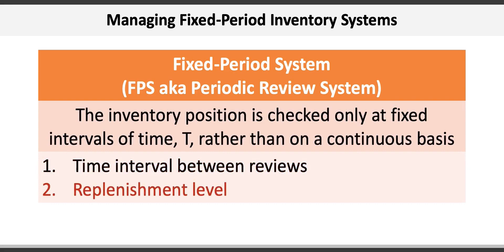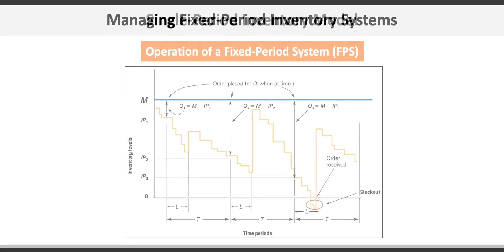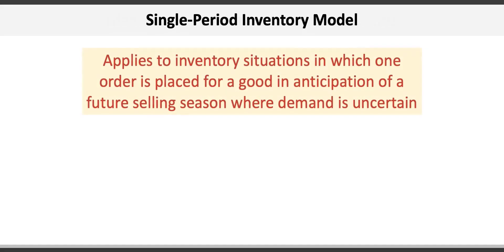In a fixed period system, the lead times and time intervals between reviews are the same, but the amount of inventory ordered may differ every time. For example, a vending machine restocked every week can hold 30 Mars bars but may have 10 left this week, requiring only 20 to be restocked. The following week the machine could be sold out, requiring 30 to be restocked.